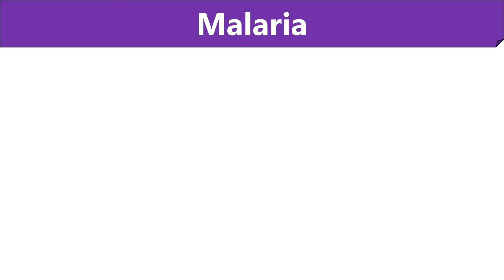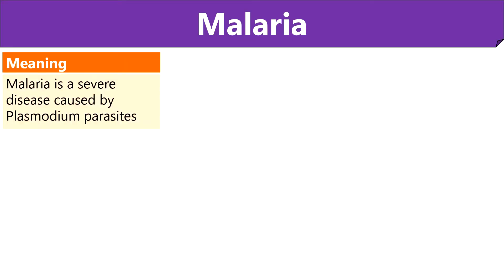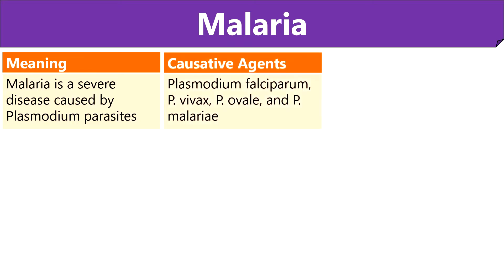Let us discuss what is malaria. Starting with the meaning, malaria is an infection caused by a protozoan parasite of the genus Plasmodium. Plasmodium falciparum, Plasmodium vivax, Plasmodium ovale, and Plasmodium malariae are the causative agents that can induce malaria infection in humans.